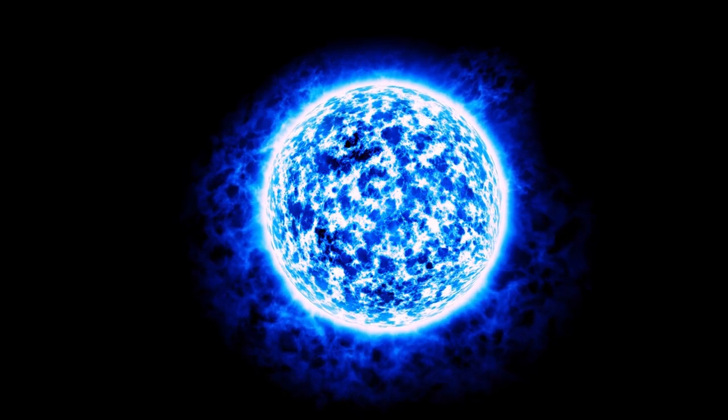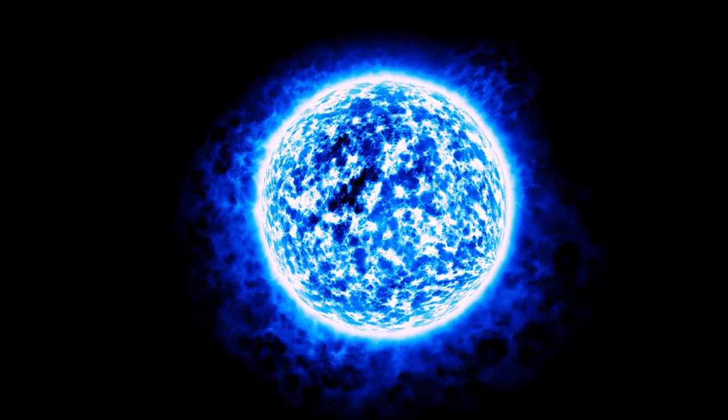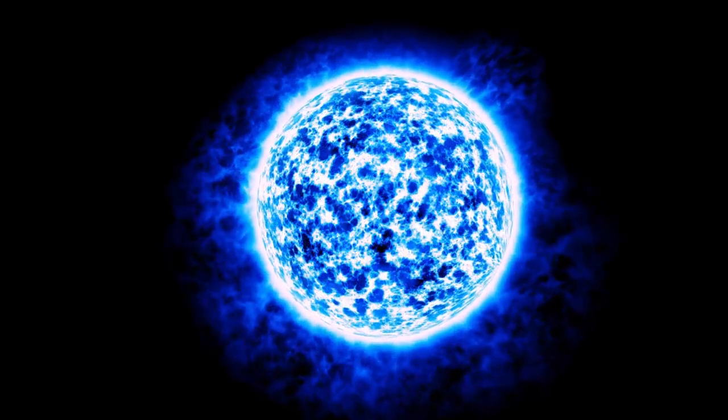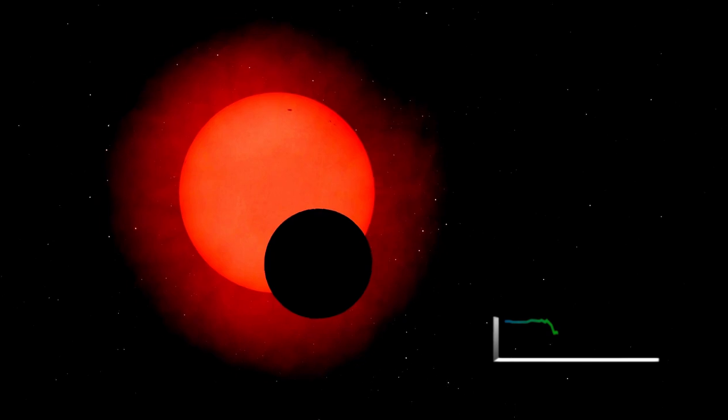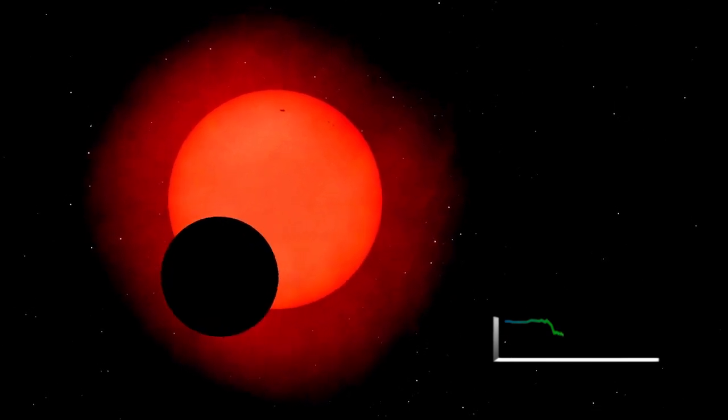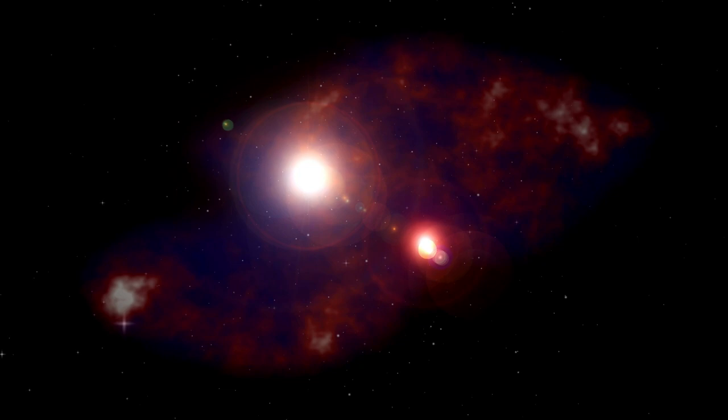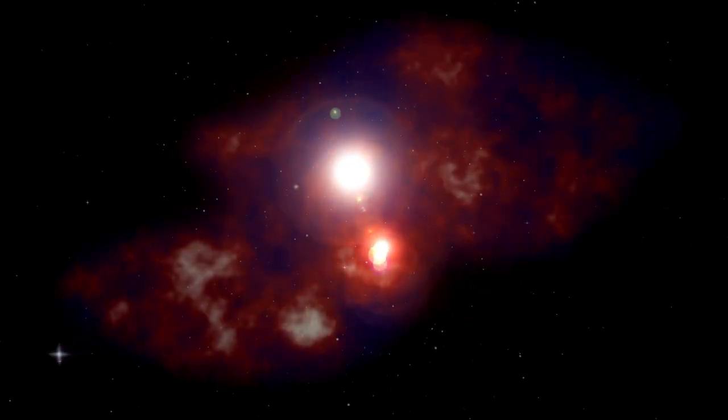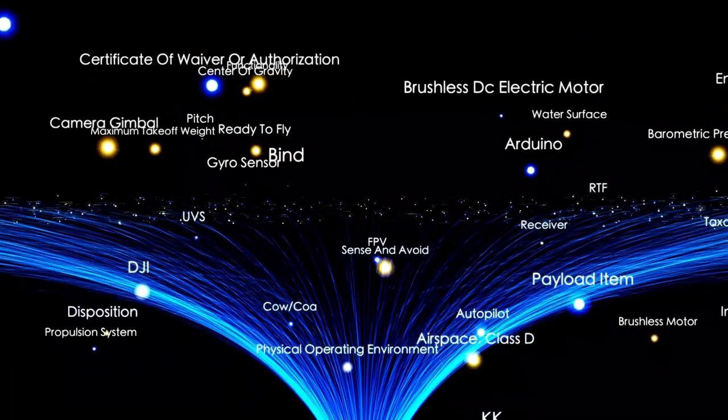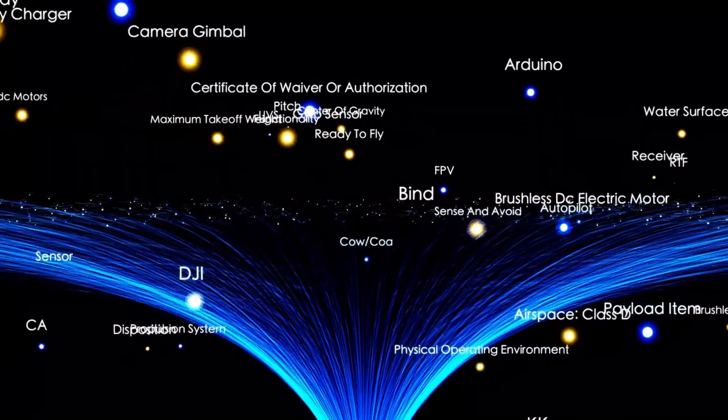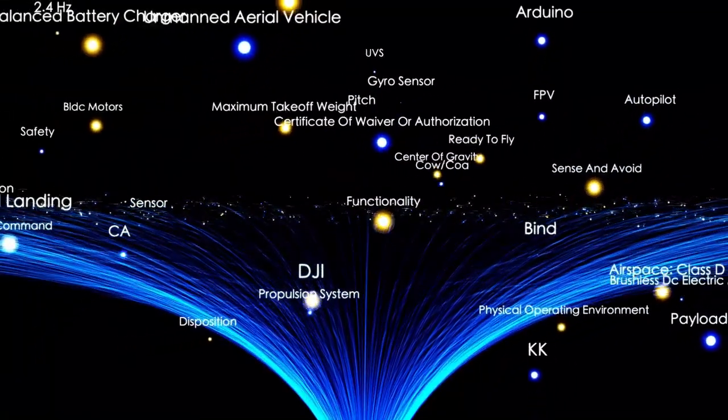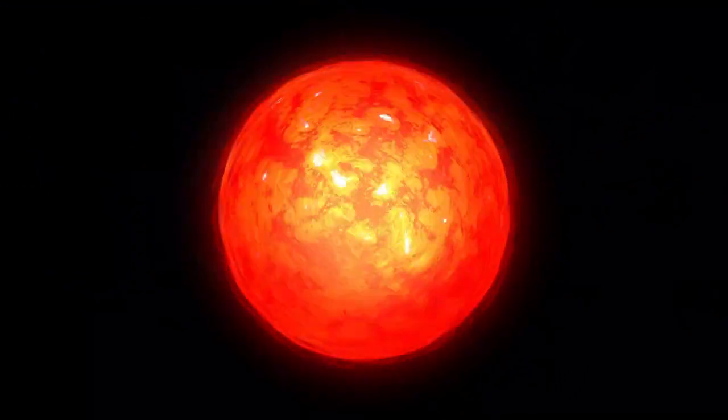This star is classified as a red supergiant, a type of massive star nearing the end of its life. Located around 642 light years from Earth, Betelgeuse is among the largest and brightest stars in our galaxy. It's estimated to be about 700 times the size of the Sun and over 10,000 times more luminous. Red supergiants like this are known for being unstable as they approach their final stages, with fluctuations in brightness being relatively common.